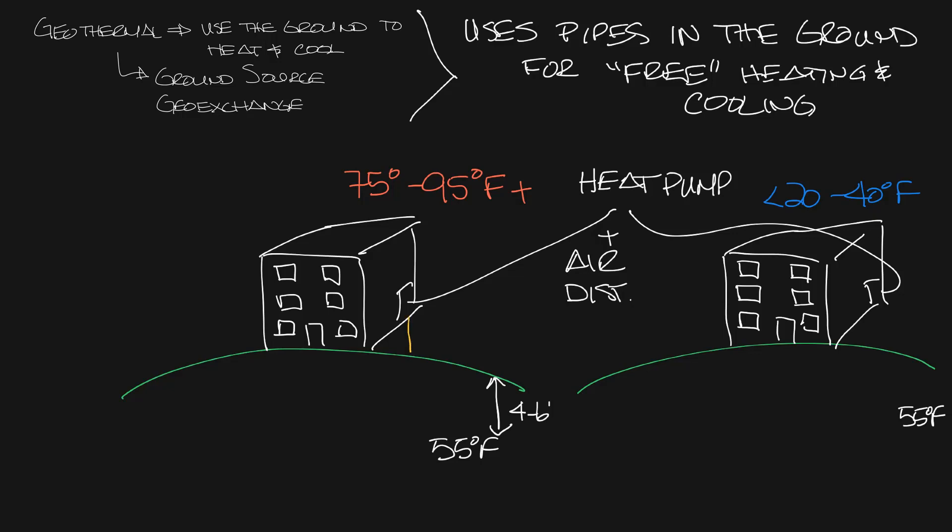Coming out of the building will be pipes that go into the ground and create a loop where water can pass through the ground and then come back into the building. The ground loop can be either horizontal or vertical depending on the location.